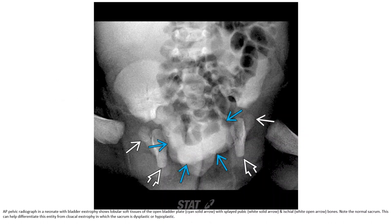This is an AP pelvic radiograph in a neonate with bladder exstrophy, showing the open bladder plate with splayed pubic and ischial bones. Note the normal sacrum. This can differentiate this entity from cloacal exstrophy, in which the sacrum is dysplastic and/or hypoplastic.